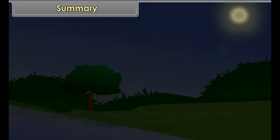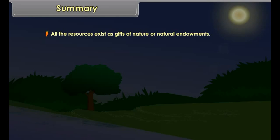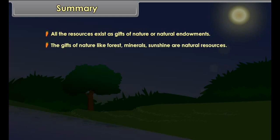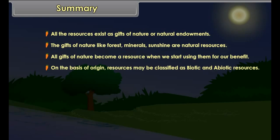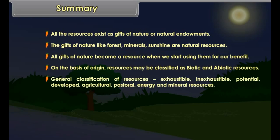Where do we get gold, copper, iron, coal, etc. from? We get these types of minerals from the interior of the earth's crust. All those resources which we get from the earth's crust by the process of mining are called mineral resources.